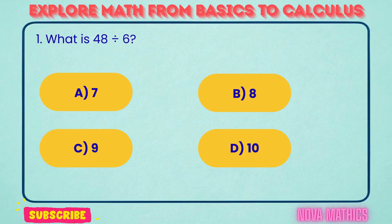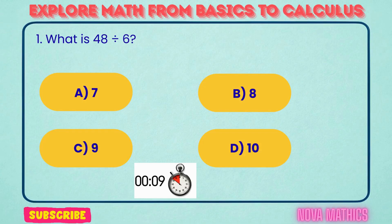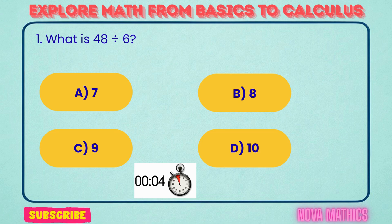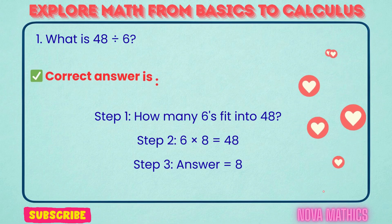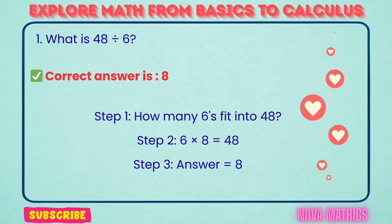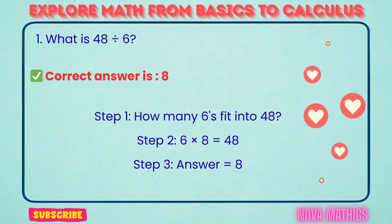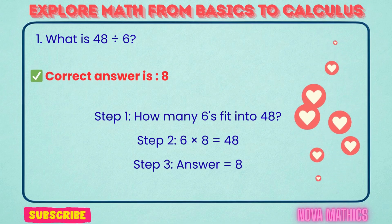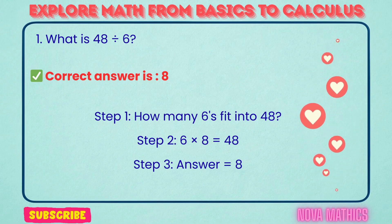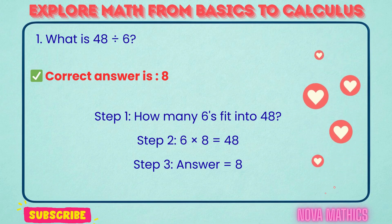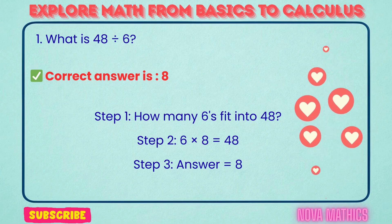1. What is 48 divided by 6? Correct answer is 8. 48 divided by 6 equals 8. We find this because 6 times 8 is 48.